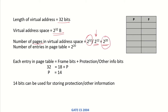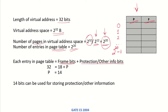Since there are 2^20 pages, that means 2^20 entries will be required in the page table. If this is the page table, we will have an entry for page 0, page 1, page 2, and so on, up to page 2^20 minus 1. Each entry in the page table contains the frame bits and the protection and other information bits.